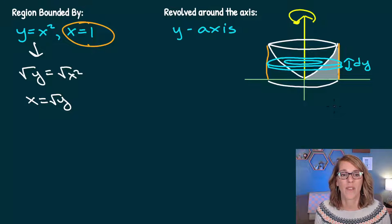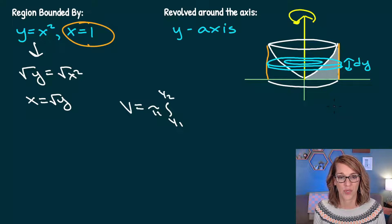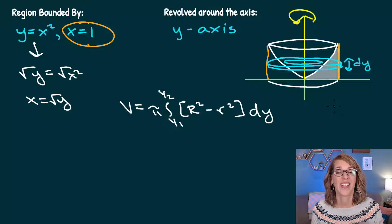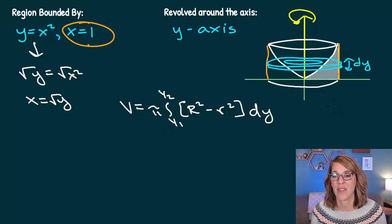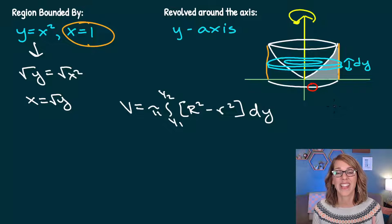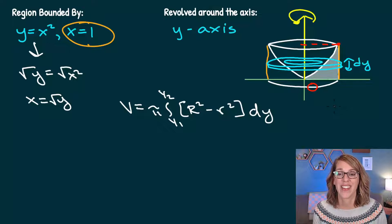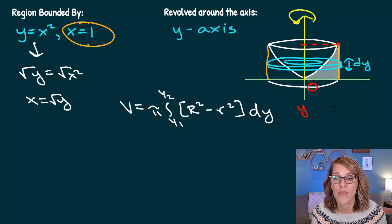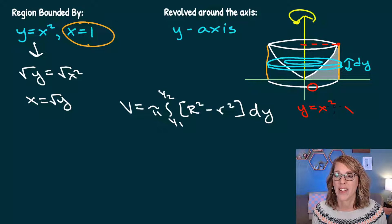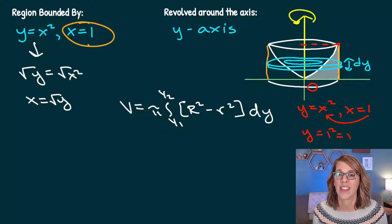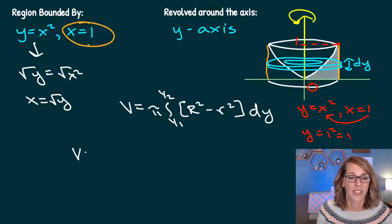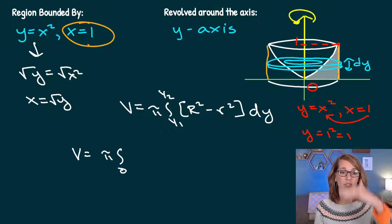The volume formula is pi times the integral from y1 to y2 of (outer radius squared minus inner radius squared) dy. I can see that my first y value is zero. My upper y value lines up with the point of intersection between y equals x squared and x equals 1. Plugging in x equals 1 gives y equals 1. So my limits of integration are 0 to 1.